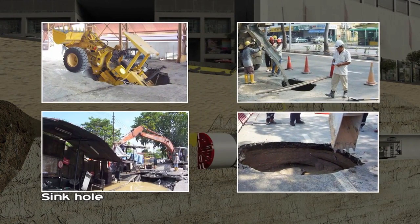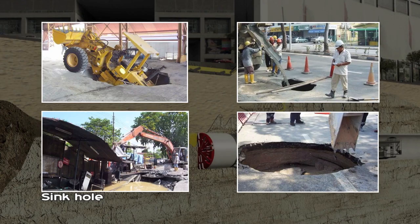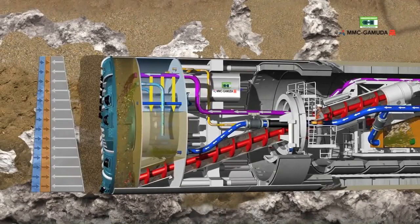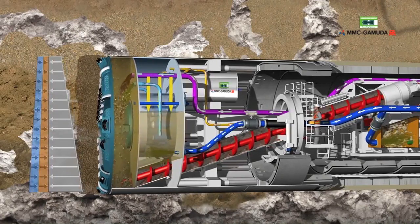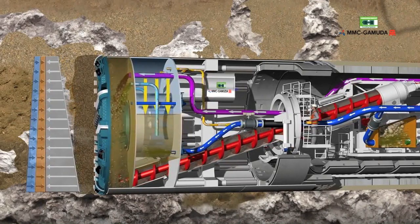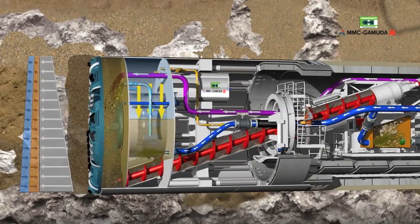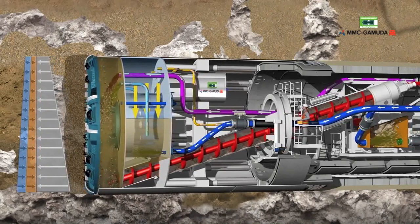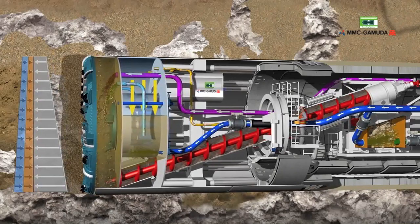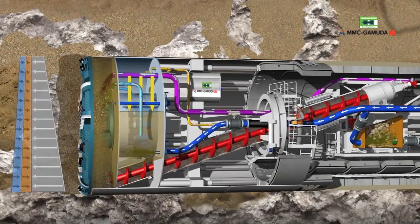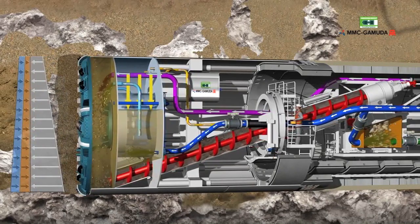The principle of the variable density TBM is to use high-density slurry to reduce the risk of sinkholes and blowouts at maximum density in the excavation chamber. Thus, the tunnel face support can range between liquid support in line with a mixed shield and the ground-paste support of an EPB TBM. The face support pressure in this operation mode can also be controlled by an air bubble, as in the mixed shield principle.